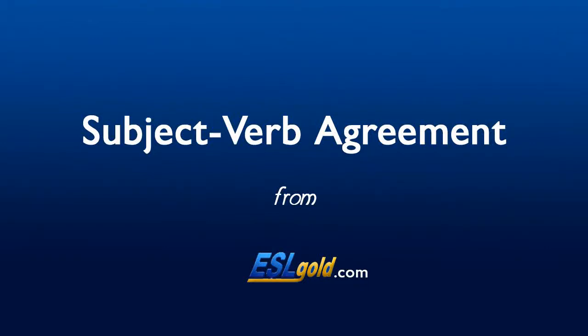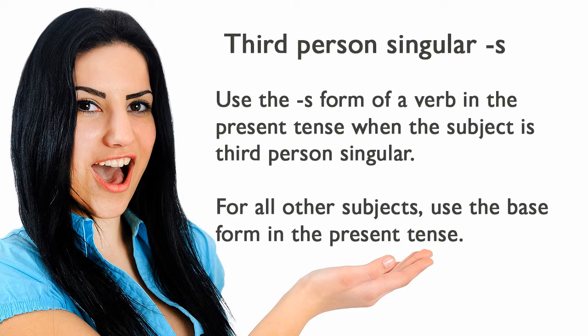Subject-Verb Agreement: Third-person singular with S. Use the S form of a verb in the present tense when the subject is third-person singular. For all other subjects, use the base form in the present tense.